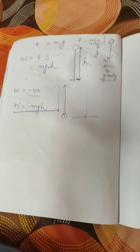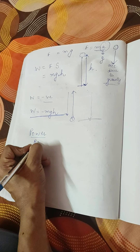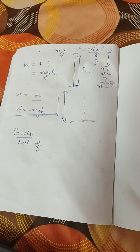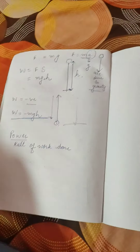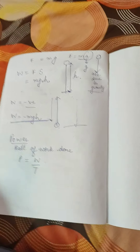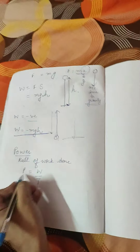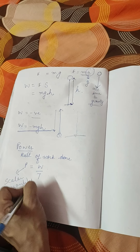The next part we are going to start is power. Power is very simply the rate of work done. Power is a scalar quantity. Since it is rate of work done, power equals work done divided by time.